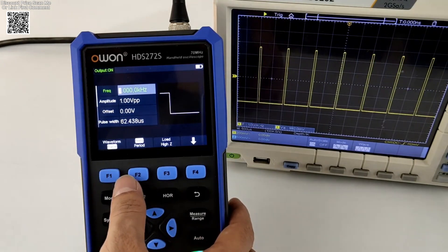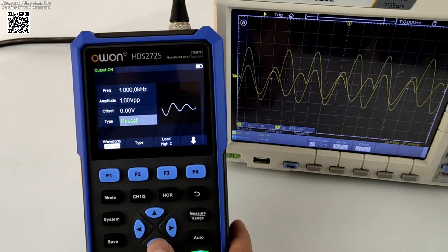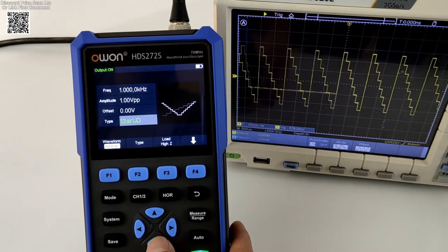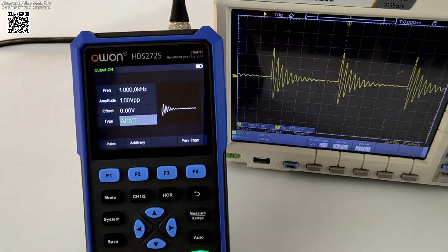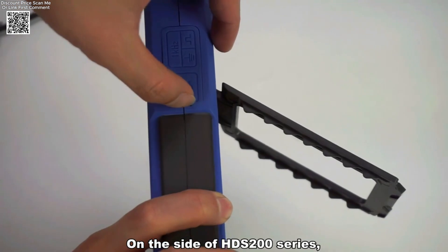Beyond the basics, the OWON HDS-2202S includes SCPI protocol support, opening the door to advanced users who want to integrate it into custom systems or automate processes with PC software. Its self-calibration function ensures long-term accuracy, making it dependable for professional use.